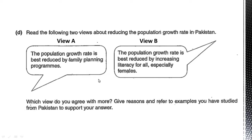The second step is how to attempt this type of question where two views are given. There are two methods to attempt it. Method one is: you can argue for and against both views. For example, for View A, write points in its favor and then write points against View A and explain them. Do the same with View B — write points in favor of View B, then points against it. And at the end, give an evaluated statement: which view do you agree with more? That is method one.